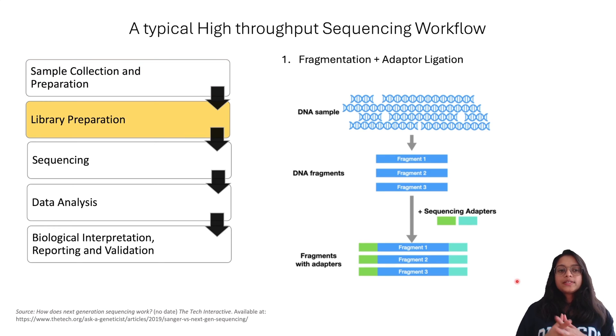Following the sample collection and preparation, the next step is library preparation. Before sequencing can occur, DNA samples need to be prepared for analysis. This involves creating a DNA library, which is essentially a collection of DNA fragments that have been prepared for sequencing.